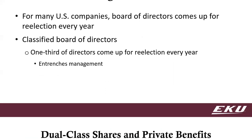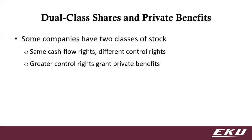Some companies also have dual-class shares of stock. Ford Motor Company has this, which is why you'll see a lot of people with the name Ford running the company — they have a special class with higher voting benefits for the Ford family, and other shares with higher dividend benefits for the investor class. It just depends on how you want to structure the company.